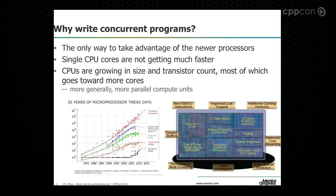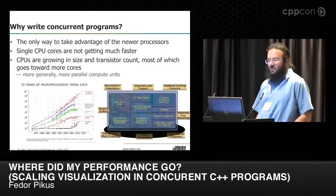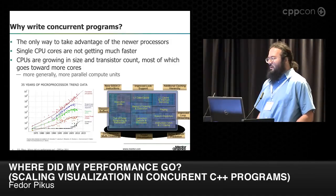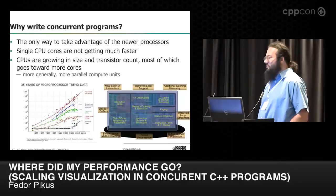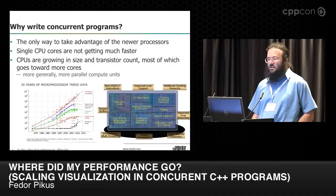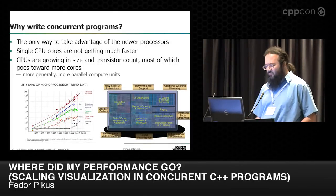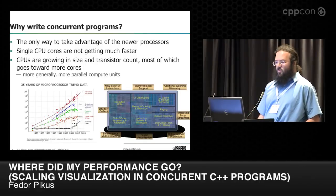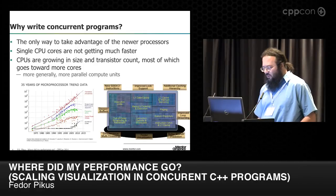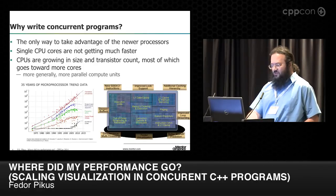If concurrent programs are so bad, why bother writing them? You've seen these slides many times, which is why I made a small copy. Basically, single CPU cores are not getting much faster anymore. The CPUs themselves are getting bigger, but where that transistor count goes is mostly into various concurrent hardware — caches, cache coherency units, vector units, supporting multiple cores, instruction decoders — stuff that can only be used if you're writing concurrent programs.